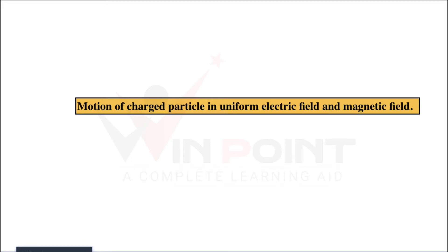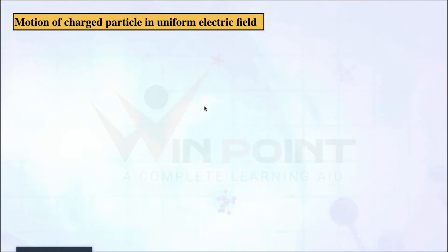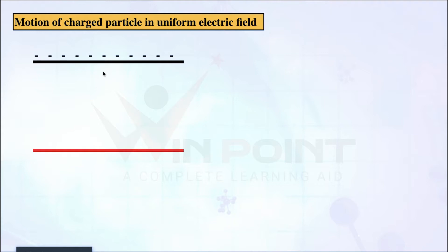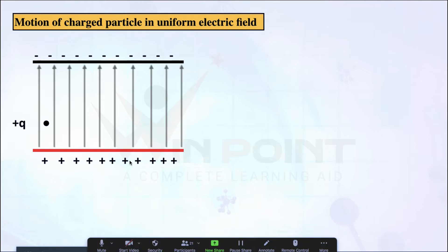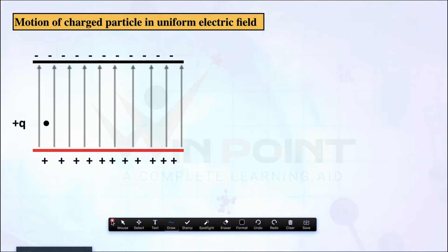Motion of charged particle in uniform electric field and magnetic field. First we will discuss electric field. We are going to consider a uniform electric field. This is the negative plate, this is the positive plate, and there will be an electric field from positive to negative. The intensity is E.